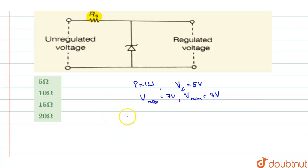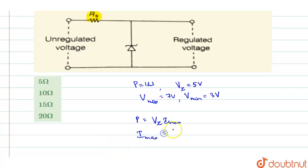If this is the situation, we know that the power dissipated will be equal to Vz, the breakdown voltage, into the maximum current I maximum. So from that we will find out I maximum. I maximum will be equal to P divided by Vz — power is 1 watt divided by Vz is 5 volt.